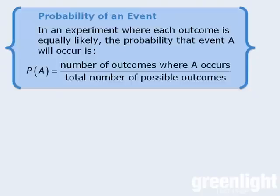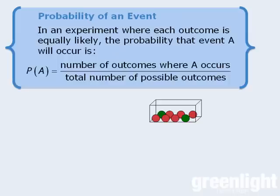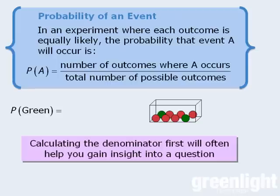Let's look at an example. Let's say we have a box containing six red balls and two green balls, and we randomly select one ball from the box. What is the probability that the selected ball is green? To answer this, we will apply the probability formula. When we apply this formula, it's a good idea to calculate the denominator first, as doing so will often help us gain some insight into the question.